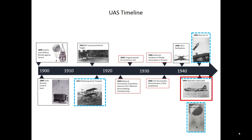The United States also used unmanned aircraft, codenamed Operation Aphrodite, to deliver explosives to targets. Employing a different approach to the Germans' V-1 and the Japanese balloon bombs, the U.S. used worn-out bombers packed with explosives. The main difference is that the U.S. bombers were radio controlled from another aircraft which guided them to their target, making them more of a precision weapon than the V-1s and the balloon bombs. A link to a YouTube video with more information on Operation Aphrodite is located in the learning activities section.